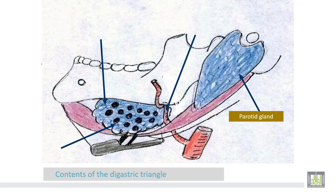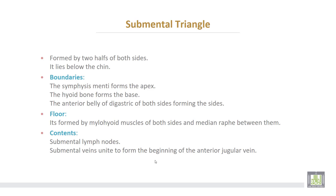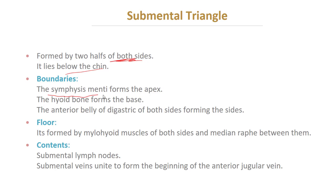This is the submandibular salivary gland, and this is the submandibular lymph nodes. This is the facial artery, which takes a tortuous course. The submental triangle is formed by two halves from both sides and lies below the chin. Its boundaries are: the symphysis menti forming the apex, the hyoid bone forming the base, and the anterior belly of the digastric muscle of both sides forming the sides.